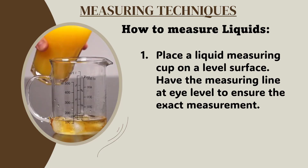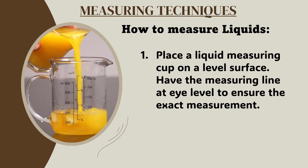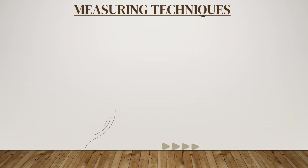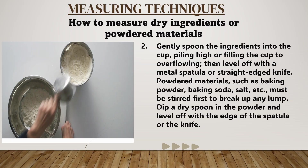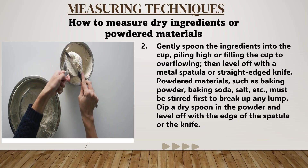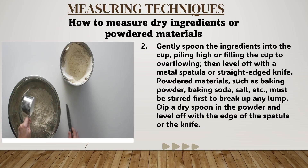How to measure liquid ingredients: place a liquid measuring cup on a level surface and have the measuring line at eye level to ensure the exact measurement. How to measure dry ingredients or powdered materials: gently spoon the ingredients into the cup, piling high or filling the cup to overflowing, then level off with a metal spatula or straight-edged knife.